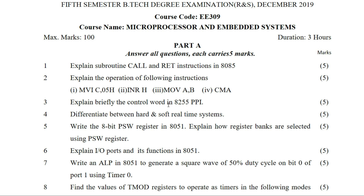The next question is: explain the operations of the following instructions. The first instruction is MVI C, 05H — moving an immediate value 05H into the C register. Then INR H, MOV A, B — it's very simple. You've already studied these commands, this is how we explain them.